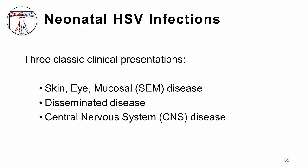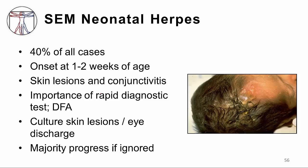There are three classic clinical presentations of neonatal HSV infections. One involves the skin, eye, and mucosal membrane, referred to as SEM. A second is disseminated, and a third involves the central nervous system. SEM is the most common form of neonatal herpes — of all babies who have neonatal herpes, 40% present with this skin, eye, and mucosal involvement.